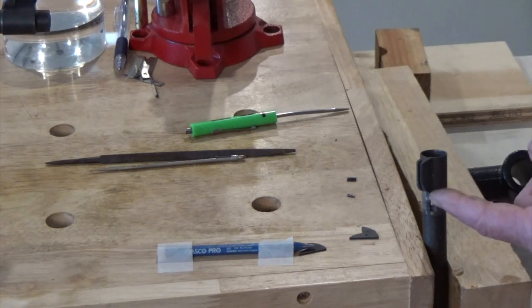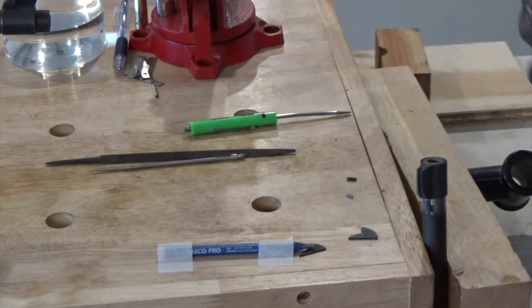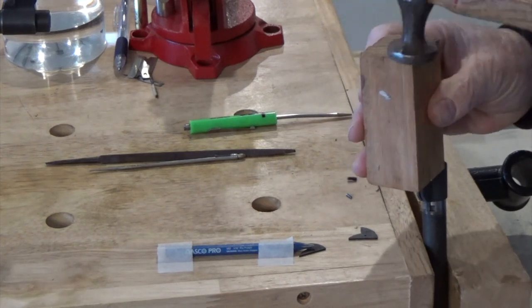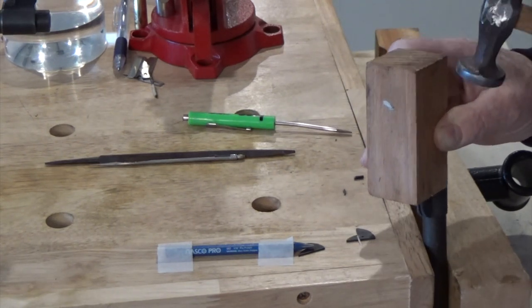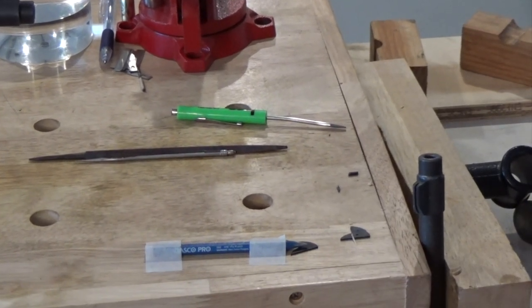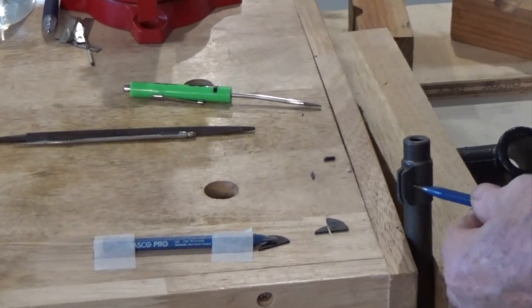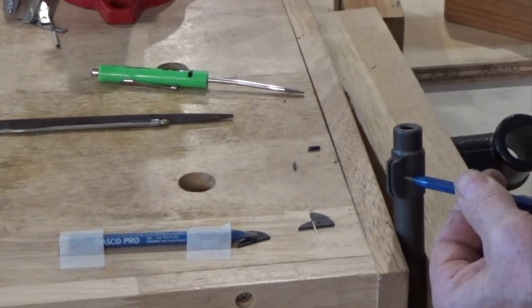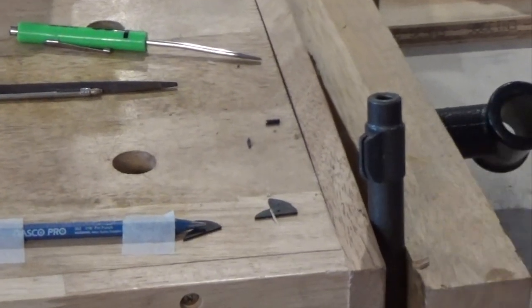The round side of the sight goes towards the shooter. At this point we take the punch and get it lined up.